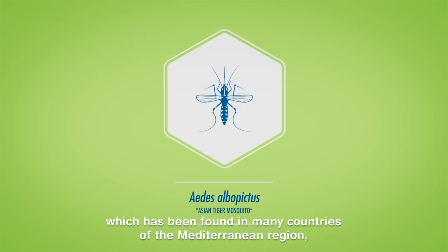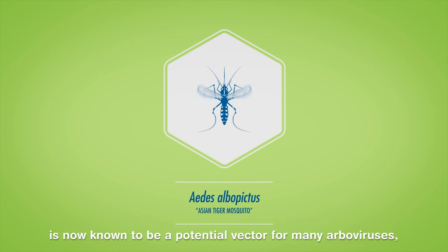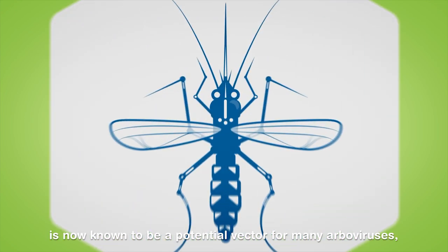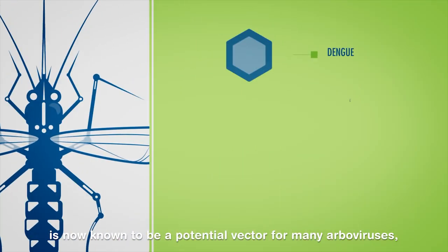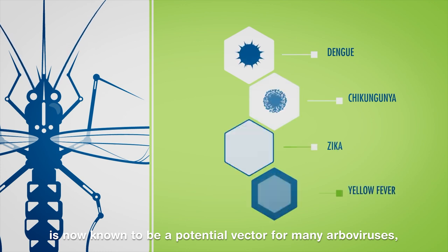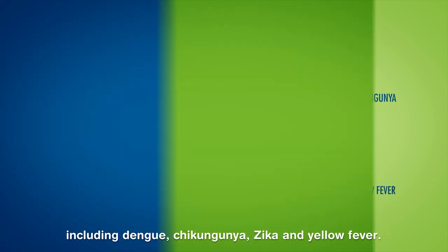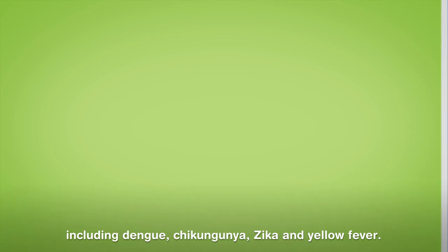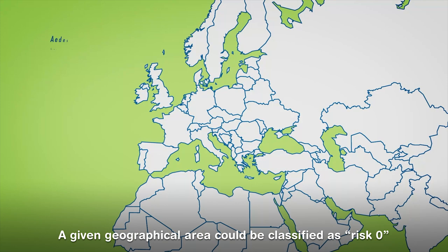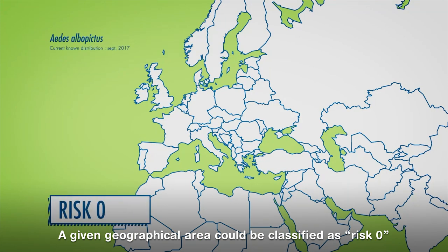which has been found in many countries of the Mediterranean region, is now known to be a potential vector for many arboviruses including dengue, chikungunya, Zika, and yellow fever. A given geographical area could be classified as risk zero in the absence of this mosquito species,